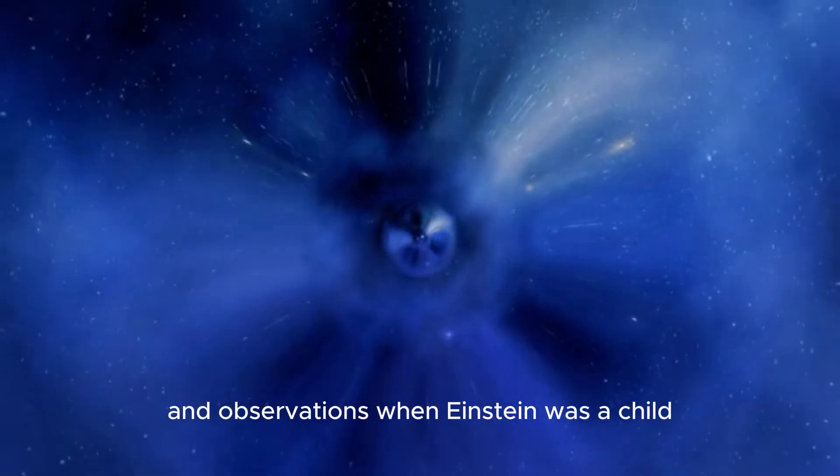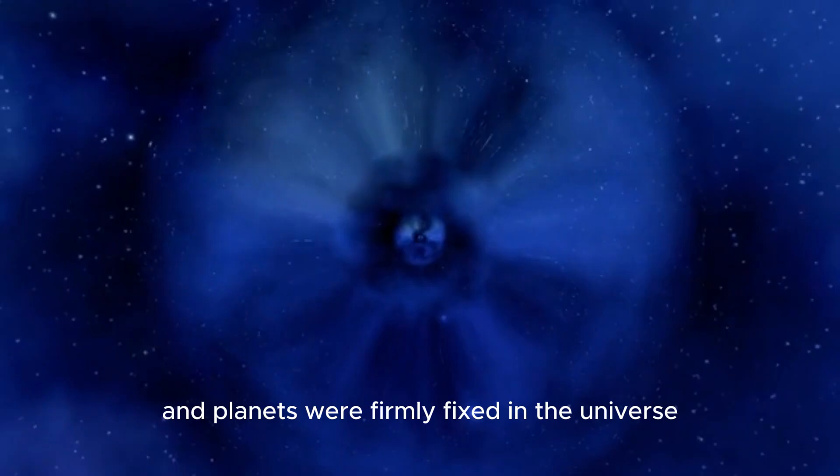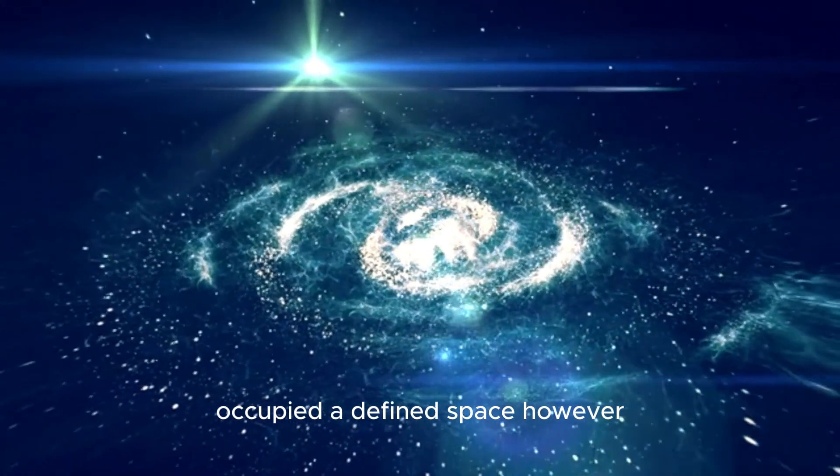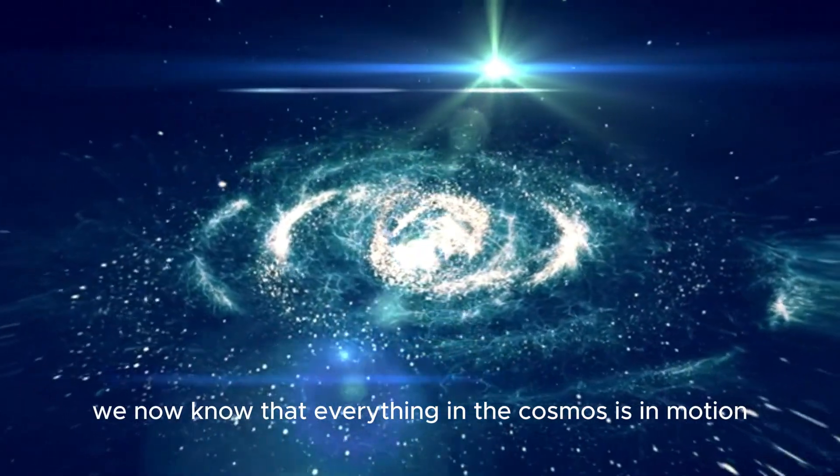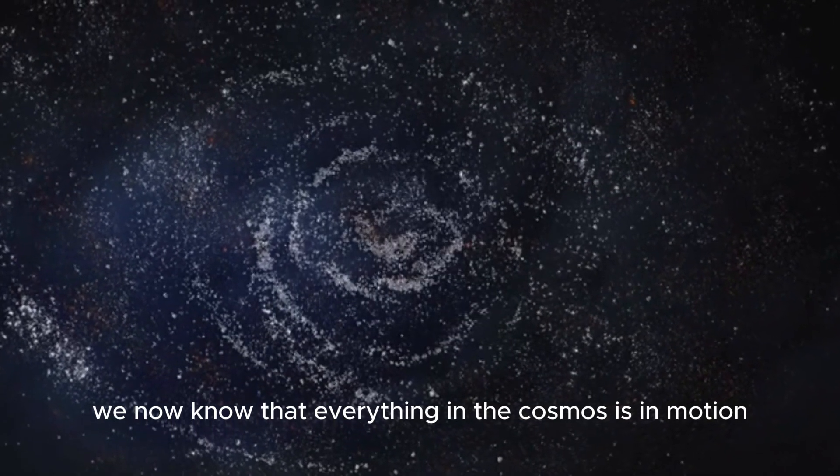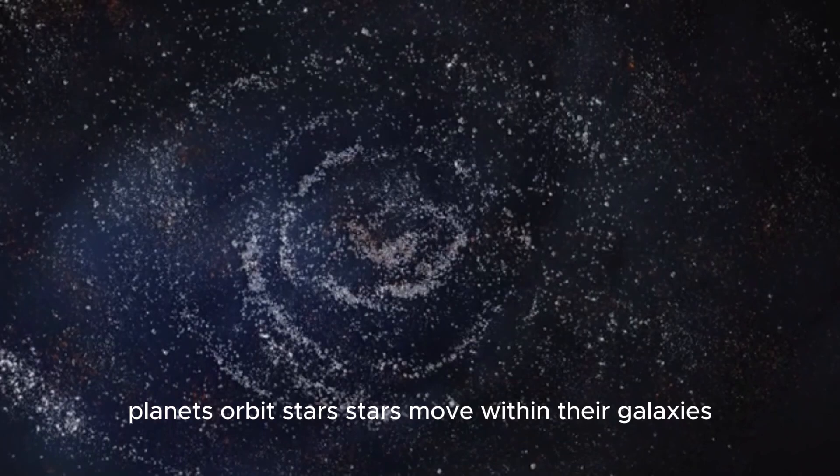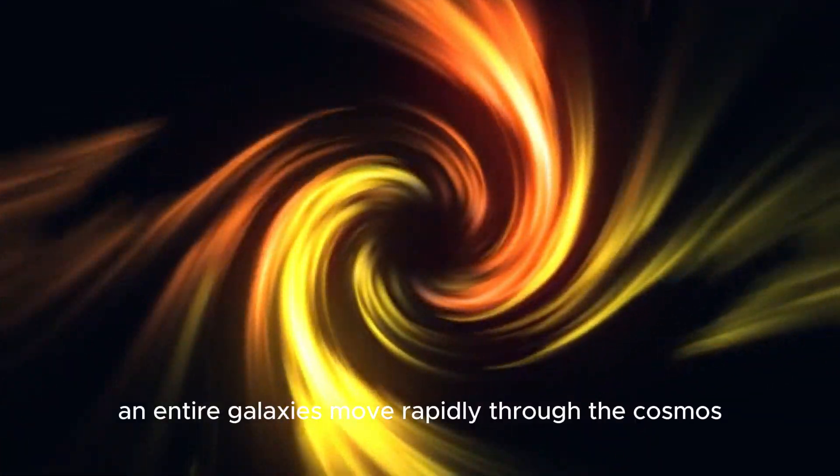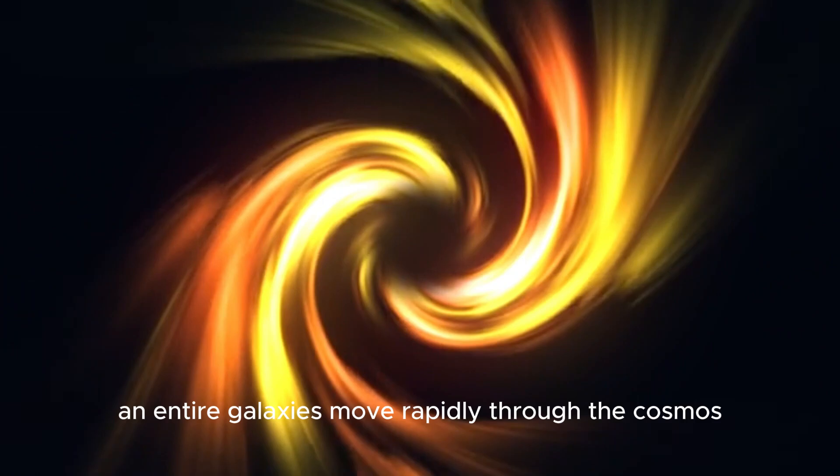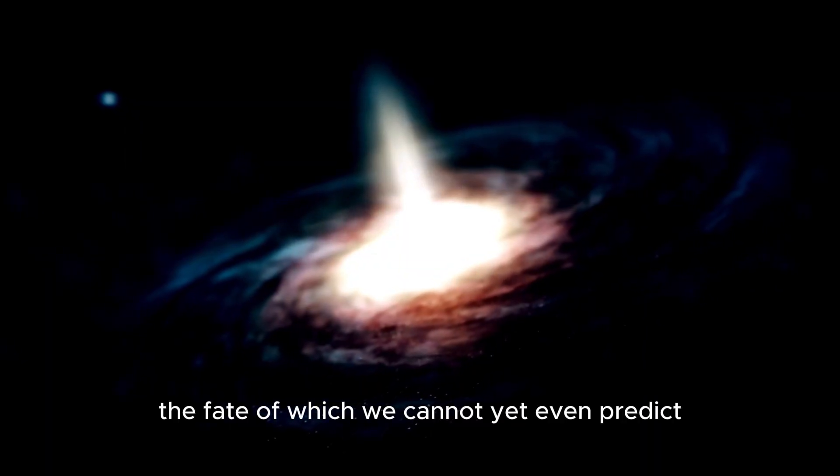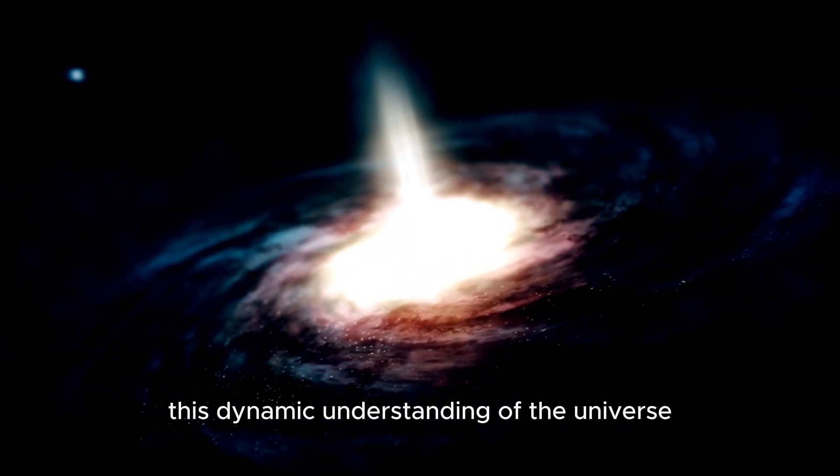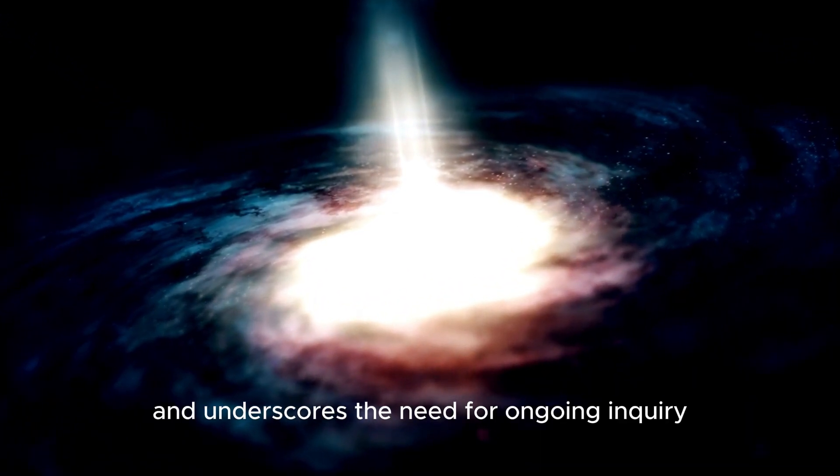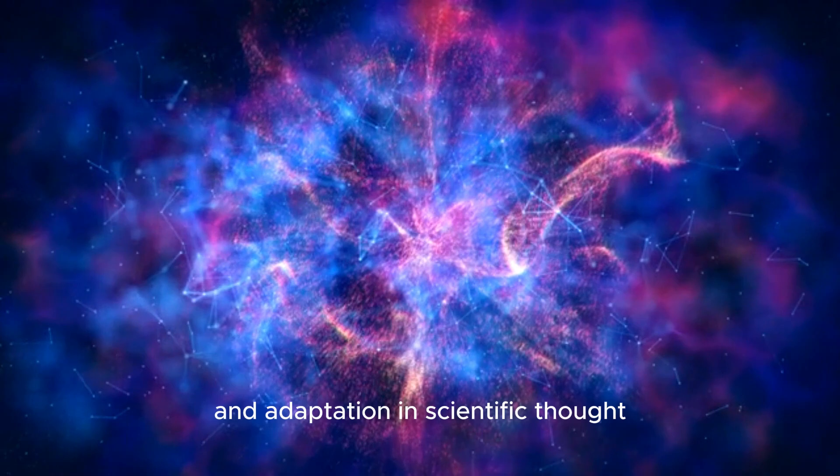When Einstein was a child, it was believed that the stars and planets were firmly fixed in the universe occupying a defined space. However, we now know that everything in the cosmos is in motion. Planets orbit stars, stars move within their galaxies at hundreds of kilometers per second, and entire galaxies move rapidly through the cosmos. This dynamic understanding of the universe challenges long-held beliefs and underscores the need for ongoing inquiry and adaptation in scientific thought.